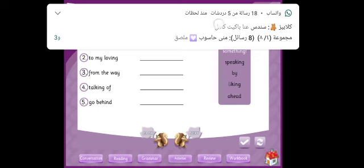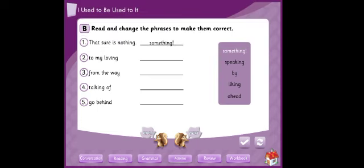Number two: to my loving. We don't say to my loving, we say to my liking. So cross out loving and replace it with liking. Number three: from the way, بالمناسبة. Of course not, 'from the way' is wrong. We say 'by the way,' so cross out from and replace it with by. Number four: talking of, بمناسبة الكلام عن. We don't say talking of, we say speaking of. Cross out talking and replace it with speaking.